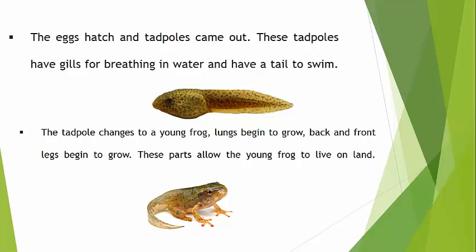The next stage is when the tadpole changes into a young frog — that is the third stage. The tadpole changes into a young frog, and lungs begin to grow. Back and front legs also begin to grow, and these parts allow the young frog to live on land.